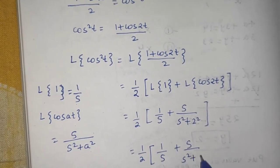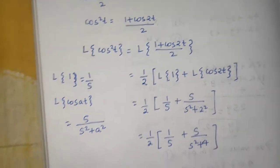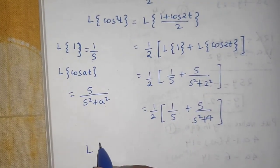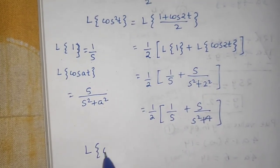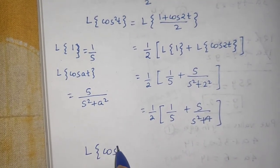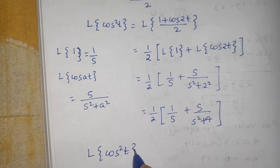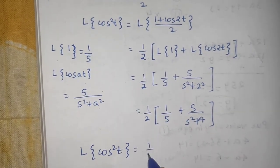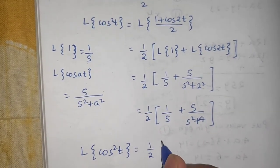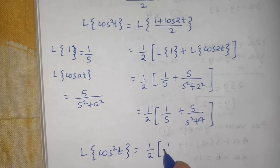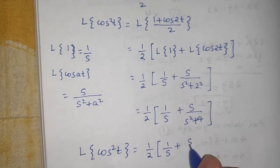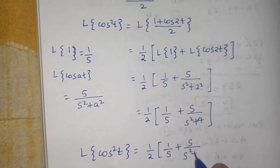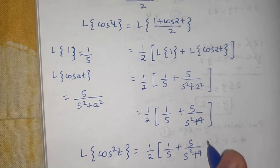So we can finally write that L{cos²(t)} = (1/2)[1/s + s/(s² + 4)] as our answer.